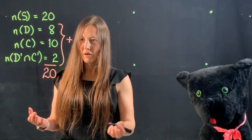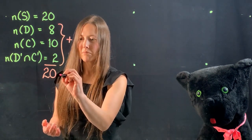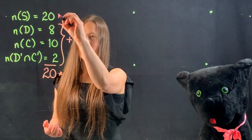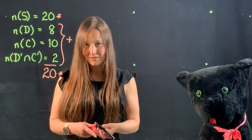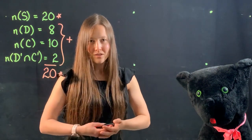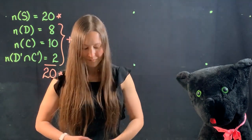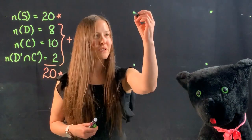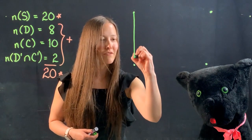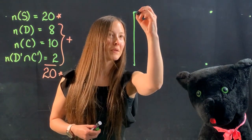All right. So that number actually matches the number that are in the universal set. What that means is we actually have disjoint sets. Disjoint sets are sets that have no elements in common.